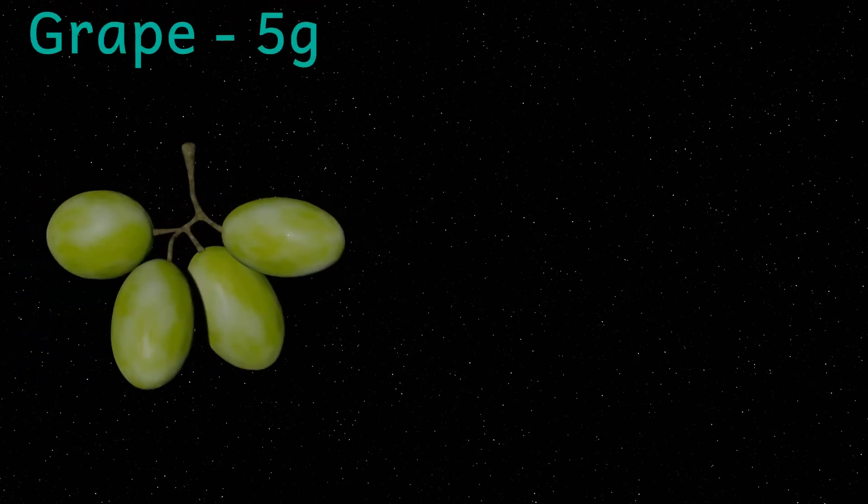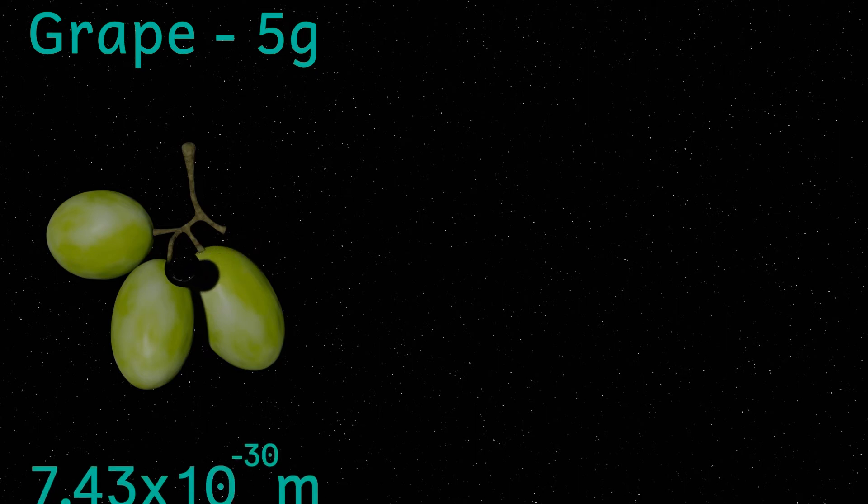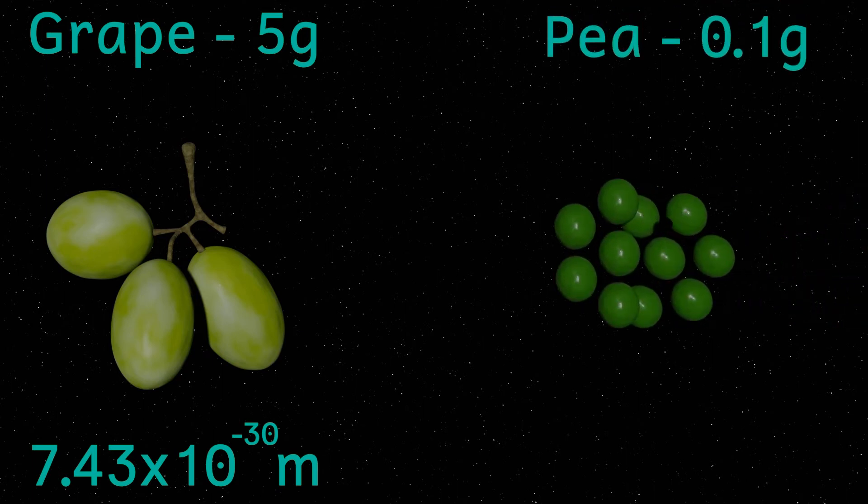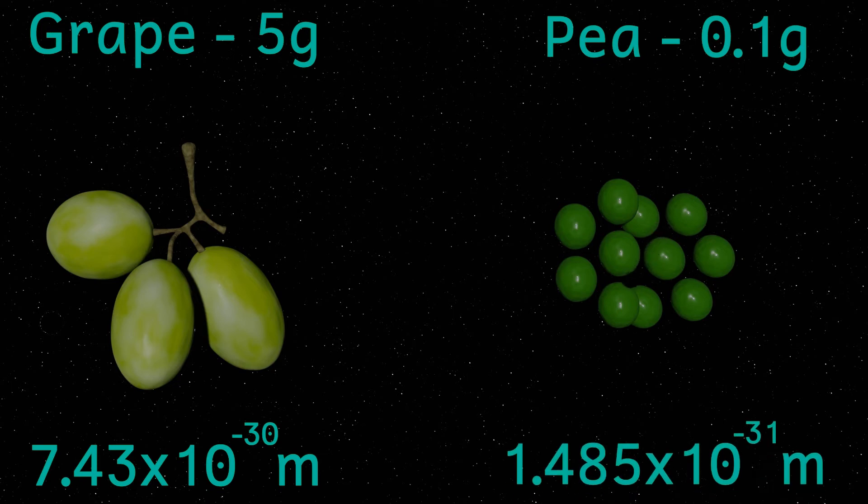We can still go smaller, I've not broken physics yet. Well a grape has a mass of 5 grams. This then would have a Schwarzschild radius as 7.43 times 10 to the minus 30 metres and a pea weighing 0.1 grams would need to get to 1.485 times 10 to the minus 31 metres. And now we're nearly getting to break physics.